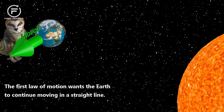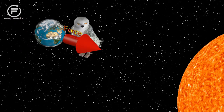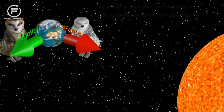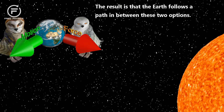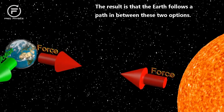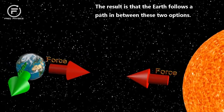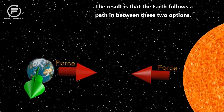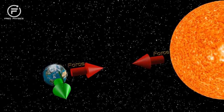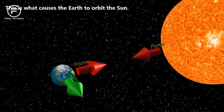The first law of motion wants the Earth to continue moving in a straight line, and the second law of motion wants the Earth to fall directly into the Sun. The result is that the Earth follows a path in between these two options. This is what causes the Earth to orbit the Sun.